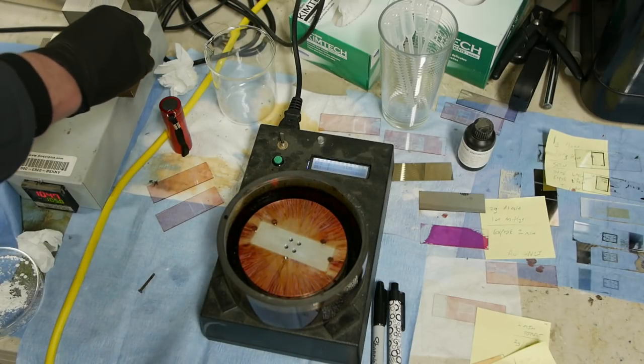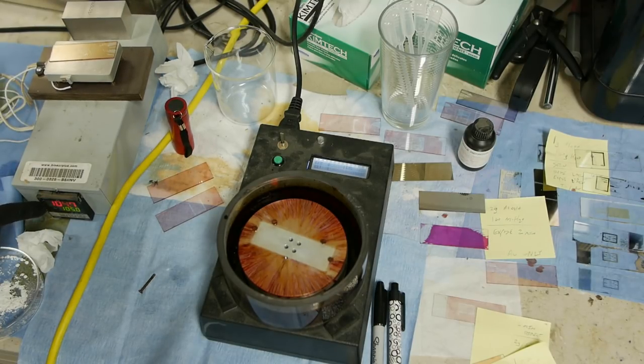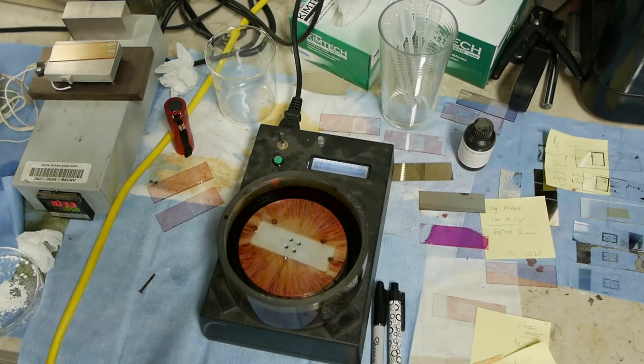And then the next thing we do is put this on a hot plate. We're currently at 100 to 105 degrees C. And we'll put it there for one minute. And the heat will drive off the rest of the solvent and get that thing ready for exposure.